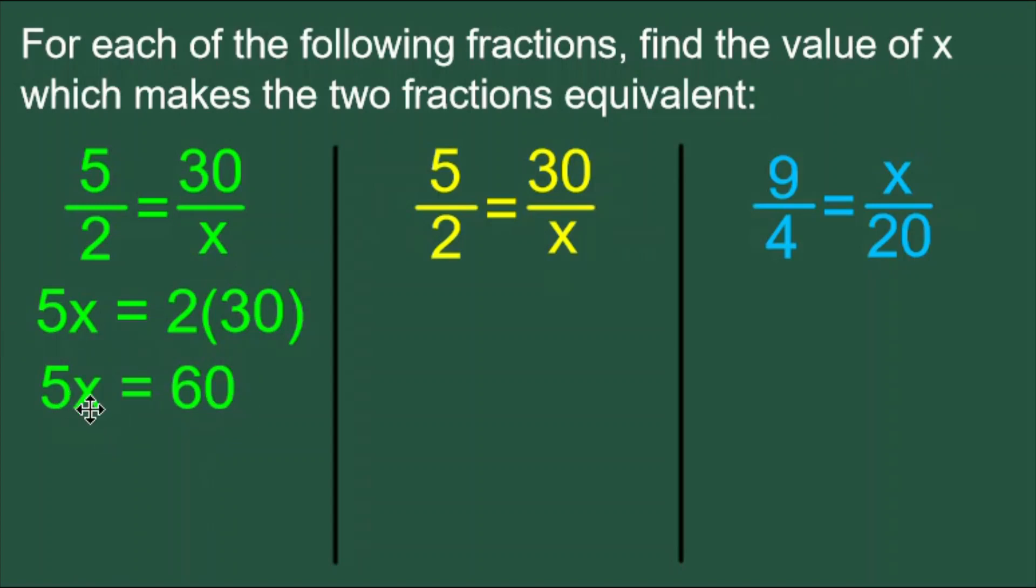And then we want to isolate our x. So since it's being multiplied by a 5, we will divide both sides by a 5. These 5s cancel. Our x is isolated and is equal to 60 divided by 5, which is 12. We have our answer.